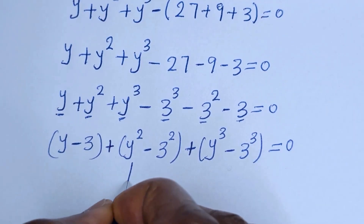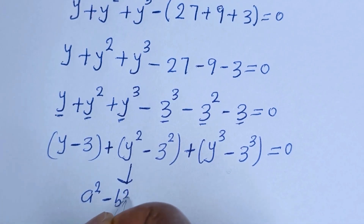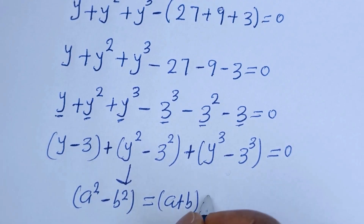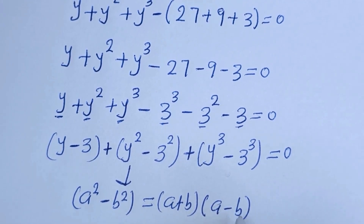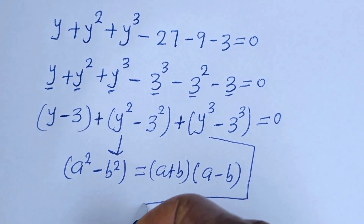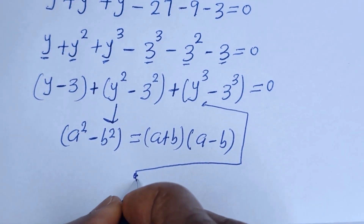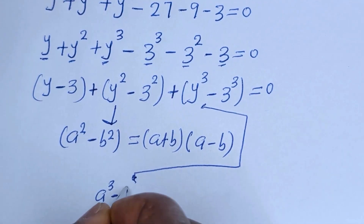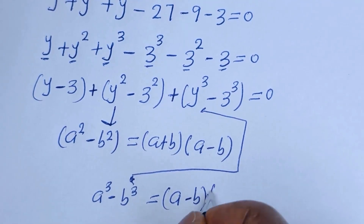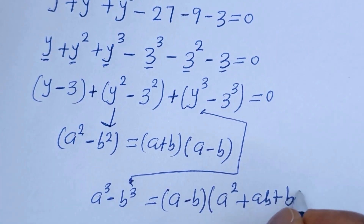Let me note that if you have a squared minus b squared, this is equal to a plus b, bracket a minus b. Also, if you have a raised to power 3 minus b raised to power 3, this is equal to a minus b, bracket a squared plus ab plus b squared.